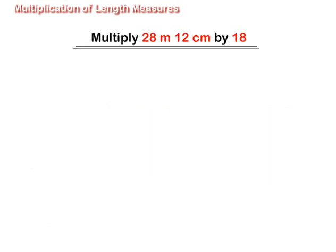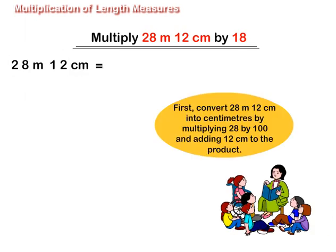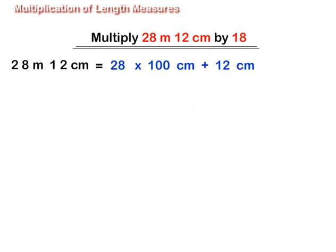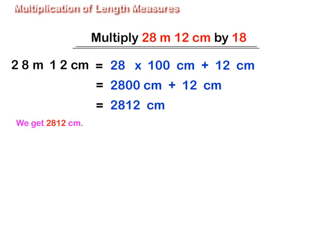Multiply 28 m 12 cm by 18. First, convert 28 m 12 cm into cm by multiplying 28 by 100 and adding 12 cm to the product. We get 2812 cm.